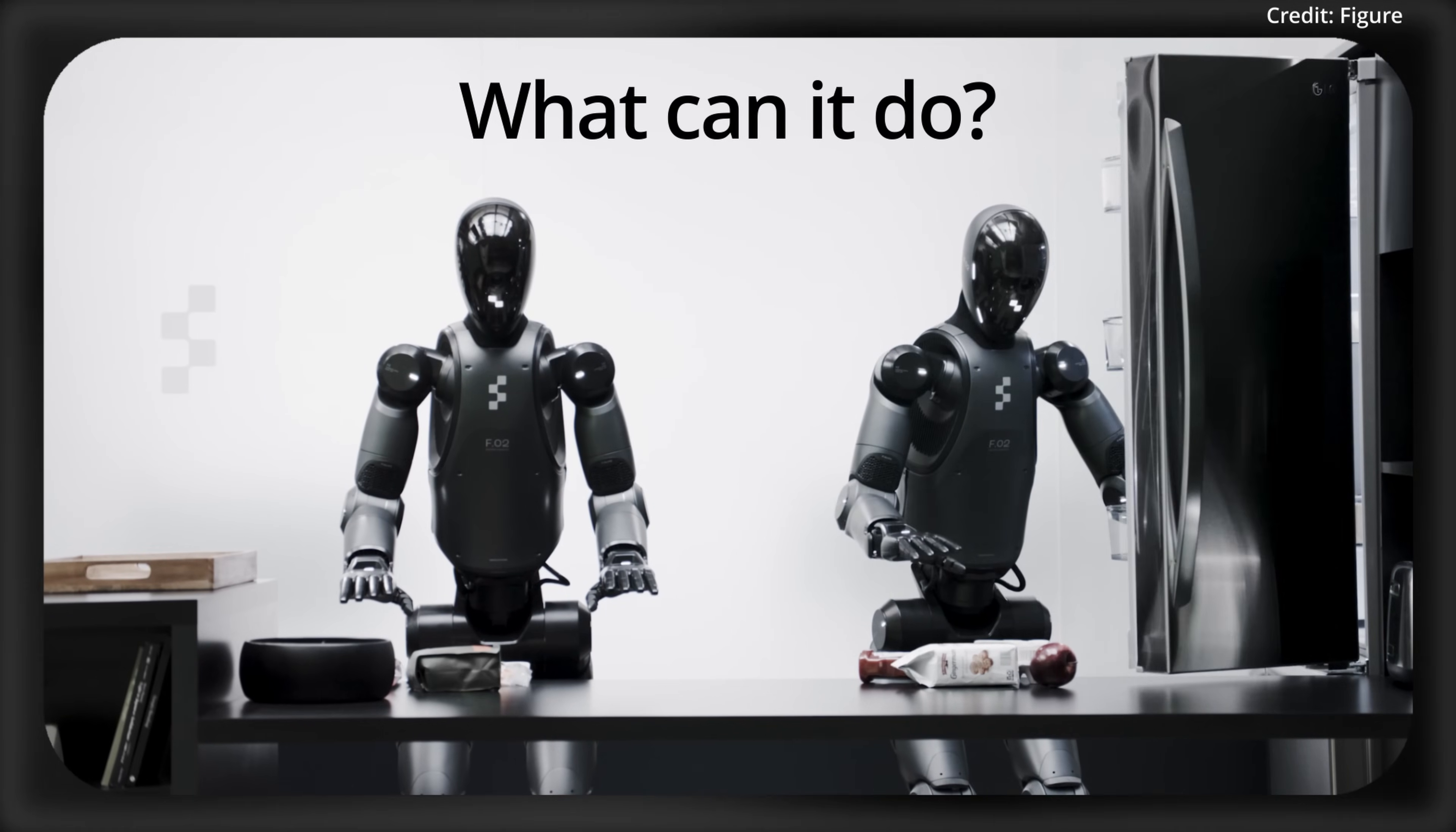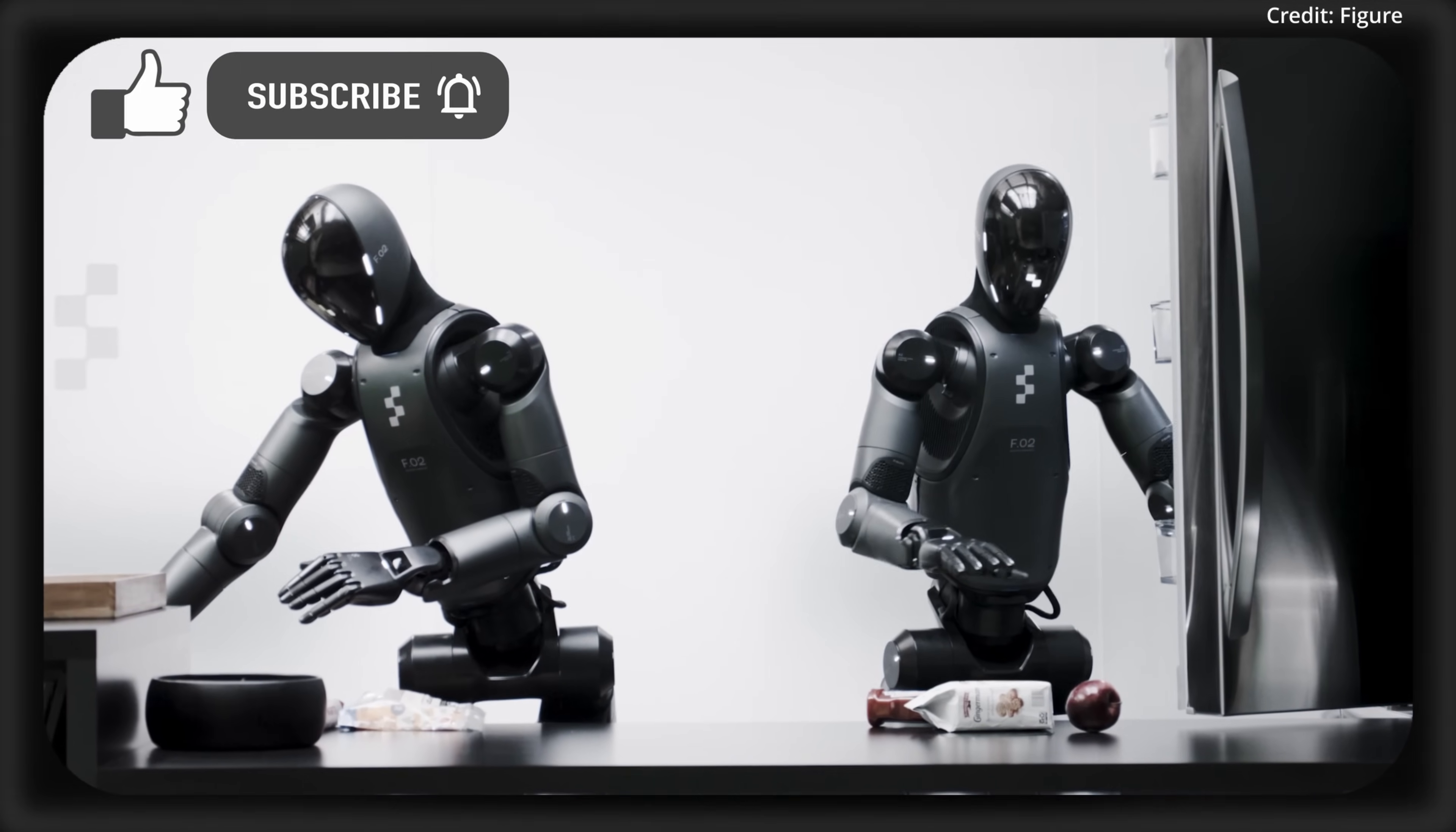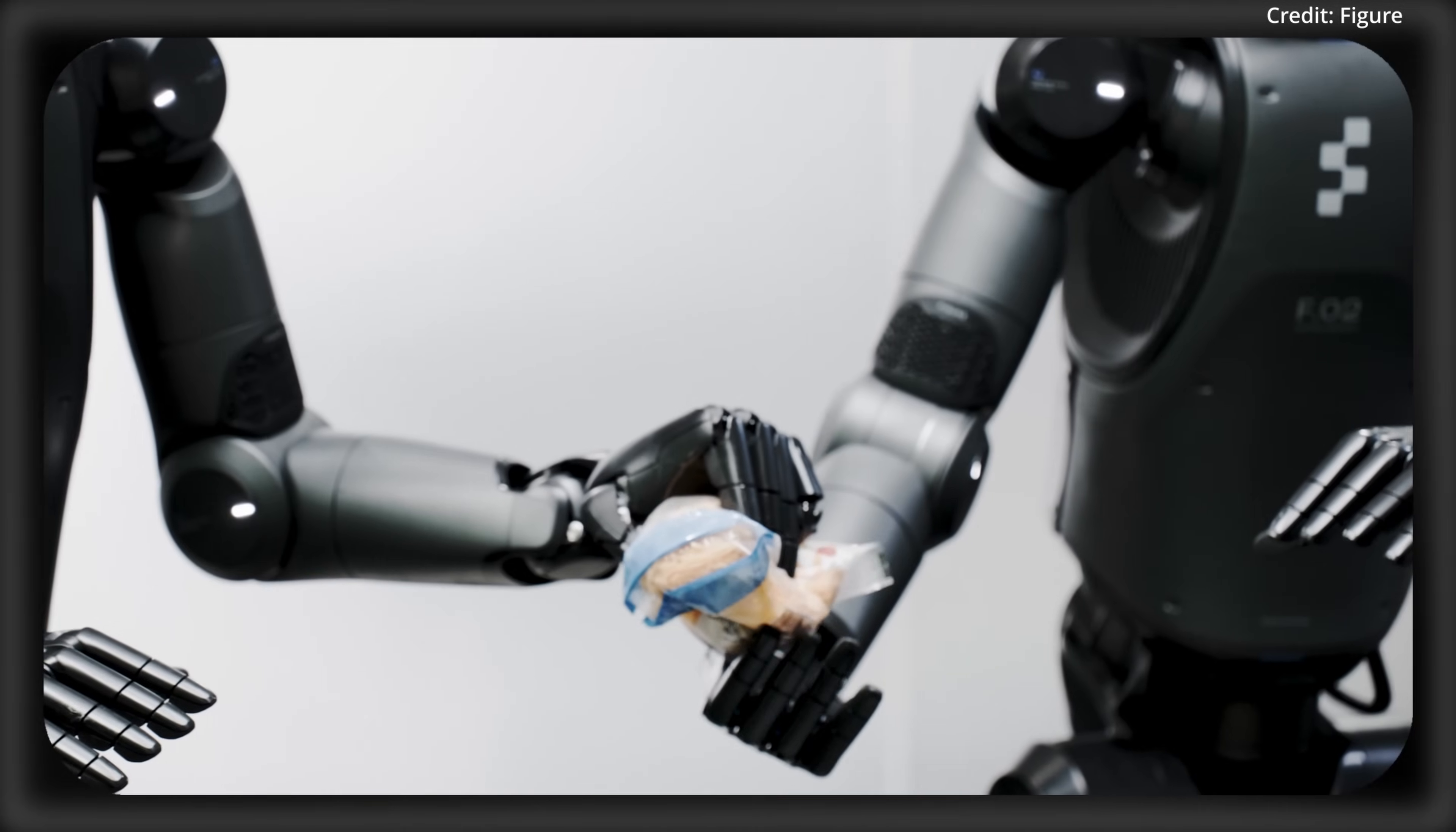But how smart is it, and what can it do? Put simply, Helix can generalize across a variety of environments, objects and tasks in the home, which is particularly difficult because unlike factories where tasks are rigid and predictable, households instead demand a level of adaptability to changing objects and scenarios.